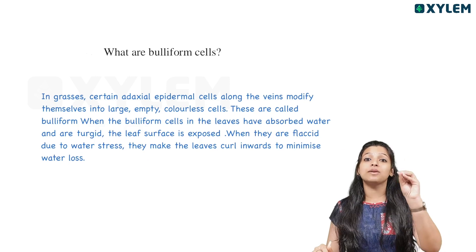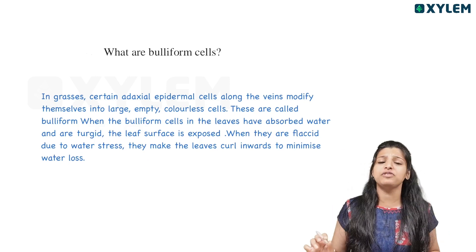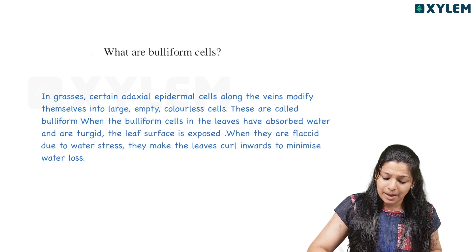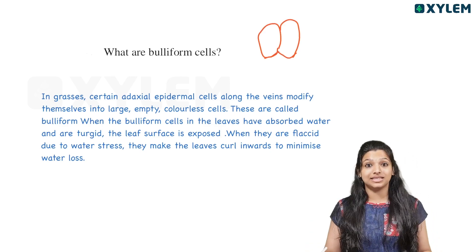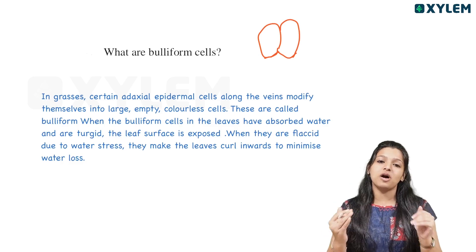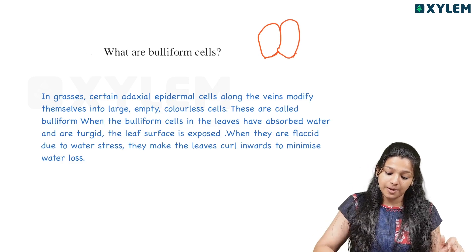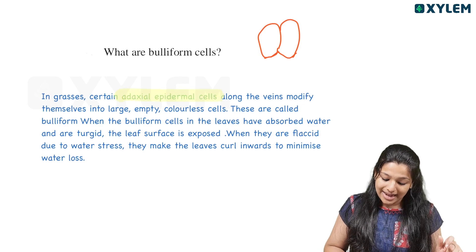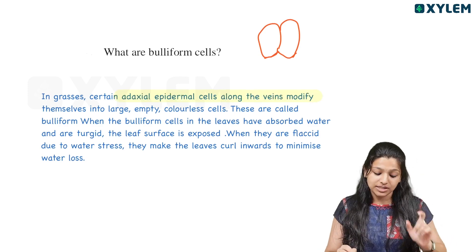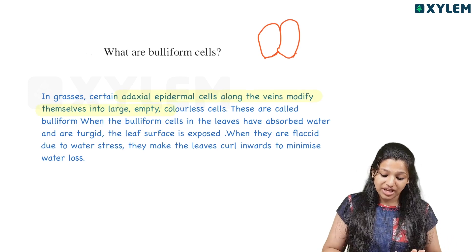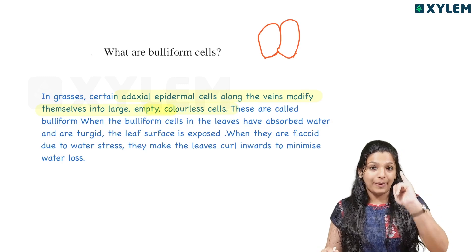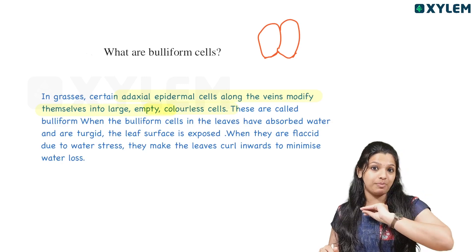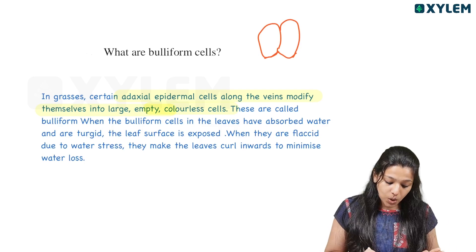What are bulliform cells? Bulliform cells — we are talking about the grass epidermal cells. They are very large, empty cells. That's why we are talking about bulliform cells. The adaxial epidermal cells along the veins modify themselves into large, empty, colorless cells. These are called bulliform cells.